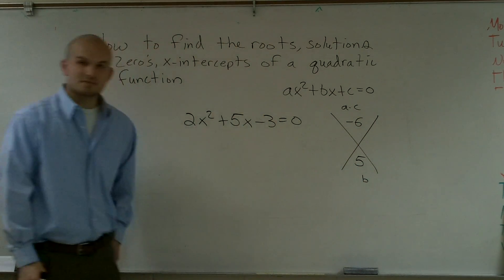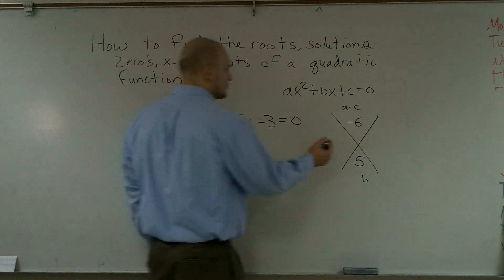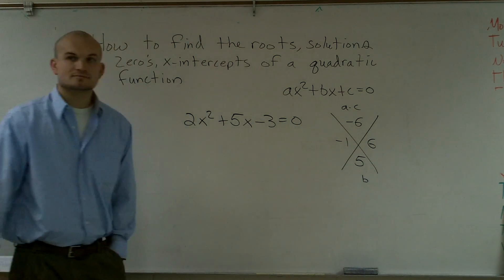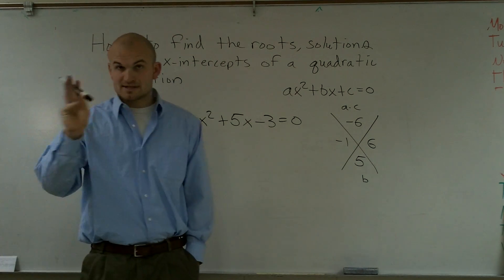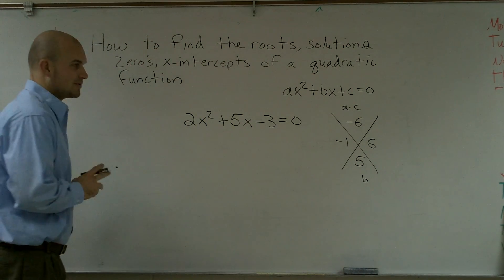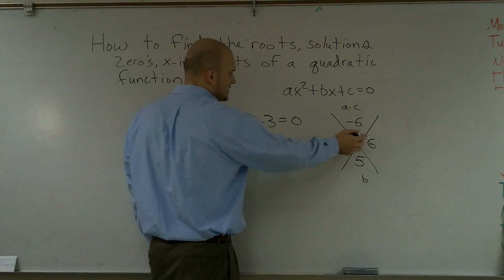So I look at my numbers and say what two numbers multiply to give me negative 6, which would be negative 1 and positive 6, but add up to give me 5. Now there's going to be three different ways I'm going to show you how to solve this. Three different ways to find the middle terms.